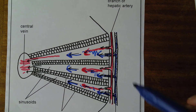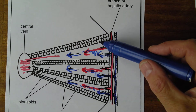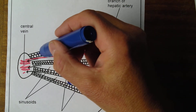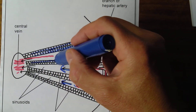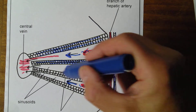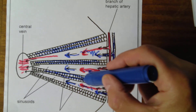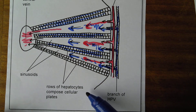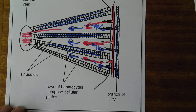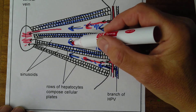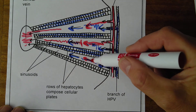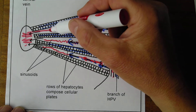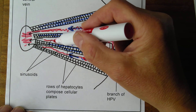This allows time for materials to be taken out of the blood into the liver cells — the hepatic plates, these rows of hepatocytes. The hepatocytes are quite large cells and are the functional units of the liver, forming these hepatic plates. The sinusoids in between are simply the name for the blood capillaries in the liver, with their very permeable walls.